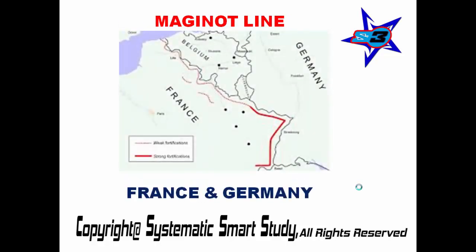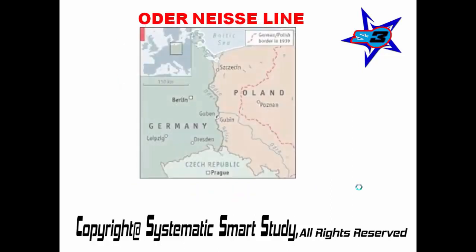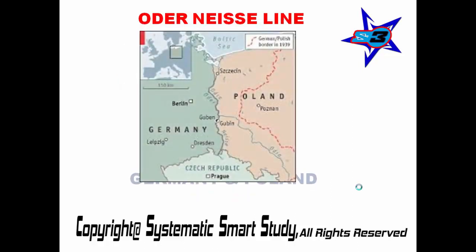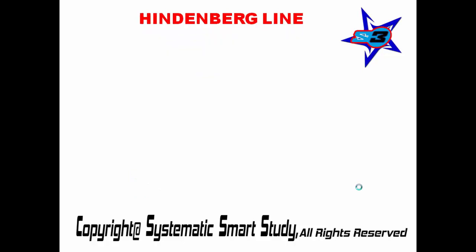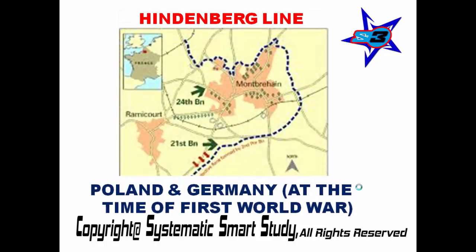between France and Germany. Oder-Neisse Line is between Germany and Poland. Hindenburg Line is between Poland and Germany, at the time of the First World War.